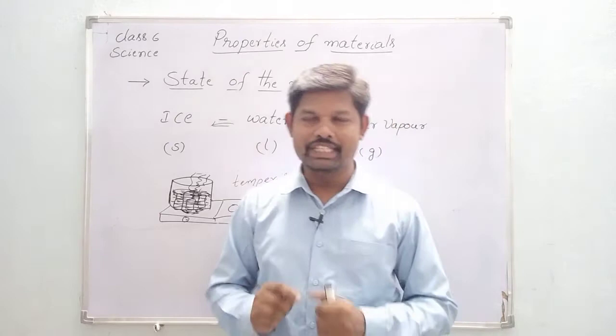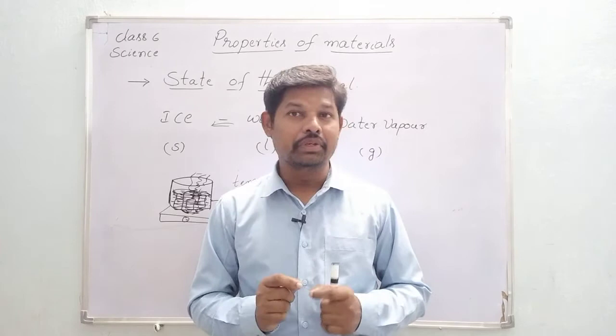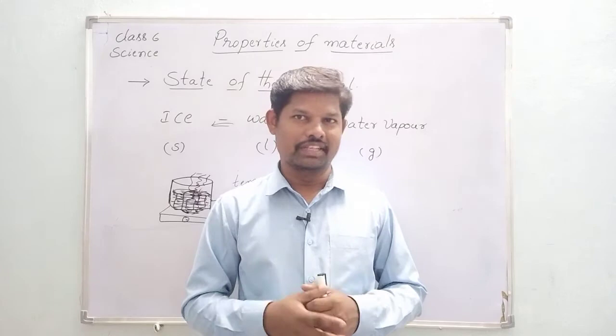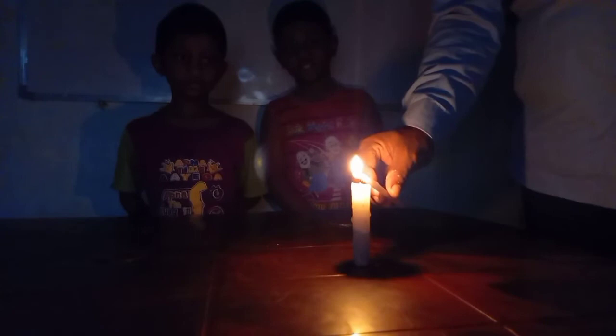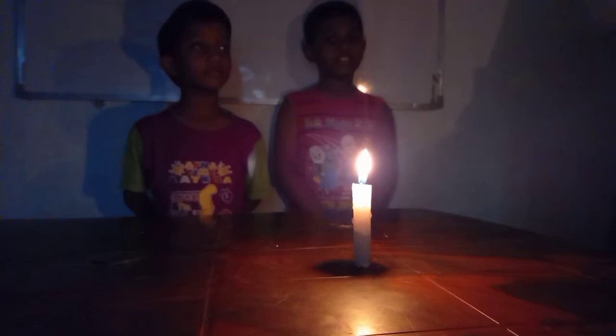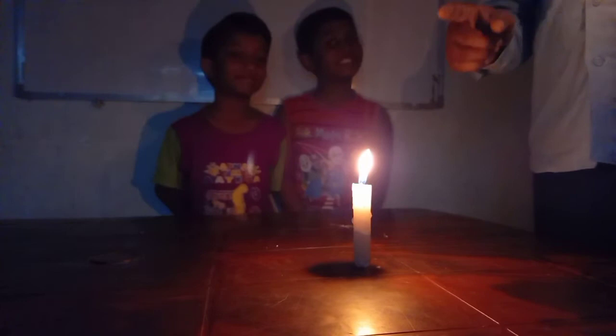So without touching the wick of the candle, you can light it — let us see how. Observe this activity carefully. Place a candle in a safe place and light it. The first time, the candle cannot be lit without touching the wick with the burning mastic, so do just that. Let the candle burn for some time.